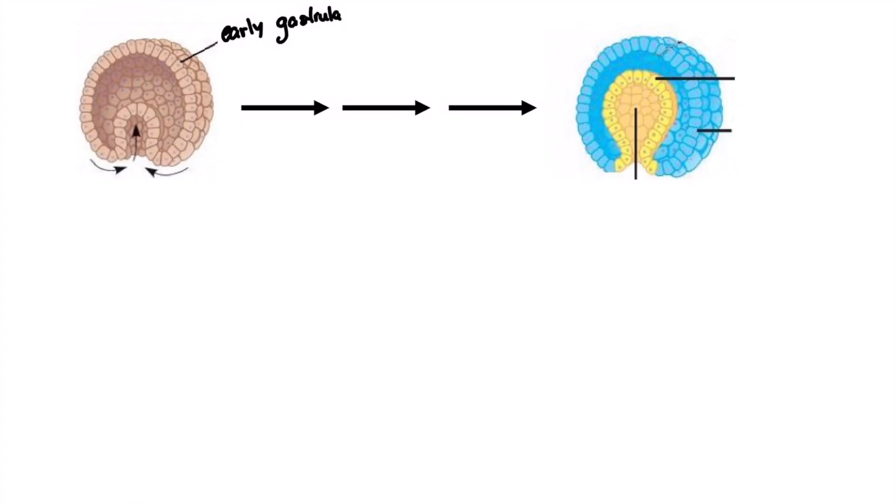At the start of gastrulation, a group of cells will buckle into the blastocoel to form a shallow depression. Continued invagination forms the archenteron, the rudimentary alimentary cavity of an embryo.